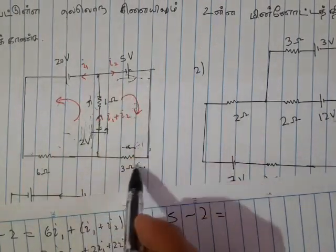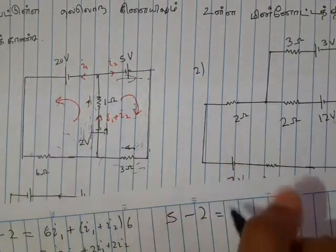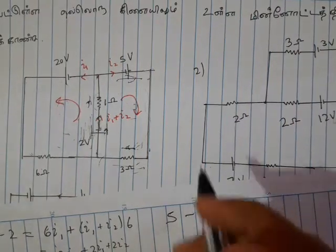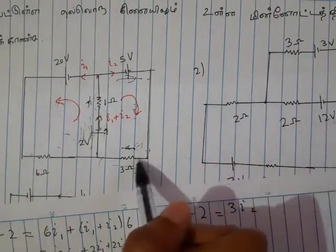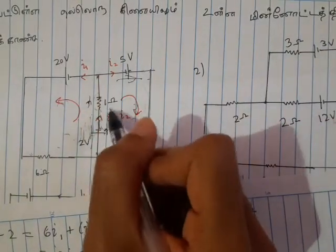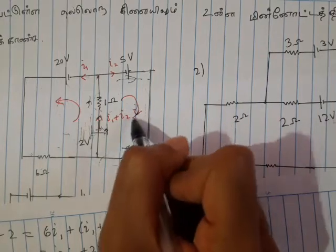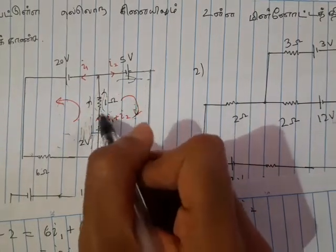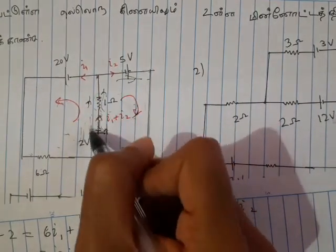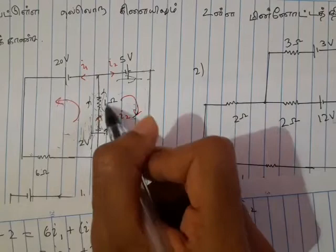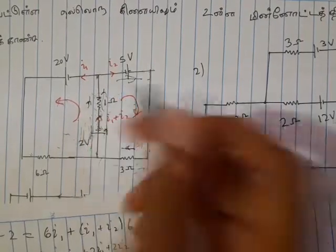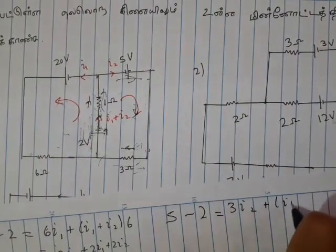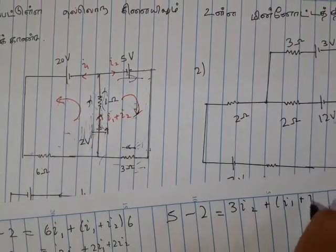So plus 3i2. So this is a current. We are going to take this one. This is the current. I1 plus I2 will take this one. So plus I1 plus I2.